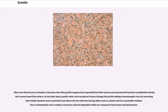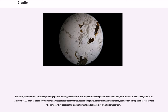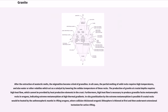Once a metamorphic rock is melted, it becomes a kind of migmatite which is composed of leucosome and melanosome. In nature, metamorphic rocks may undergo partial melting to transform into migmatites through peritectic reactions, with anatectic melts crystallizing as leucosomes. As soon as the anatectic melts have separated from their sources and highly evolved through fractional crystallization during their ascent toward the surface, they become the magmatic melts and minerals of granitic composition. After the extraction of anatectic melts, the migmatites become a kind of granulites.